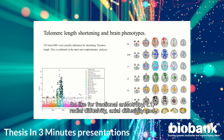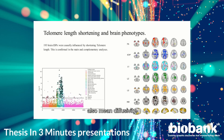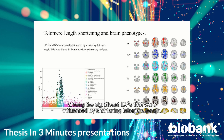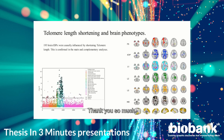The figure on the right shows the regions of these IDPs. They were mostly from diffusion MRI, including measures such as fractional anisotropy, L1, radial diffusivity, axial diffusivity, and mean diffusivity. There were also some white-gray intensity contrast measures among the significant IDPs differentiated by shortening telomere length. Thank you so much.